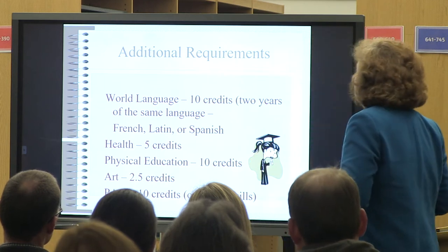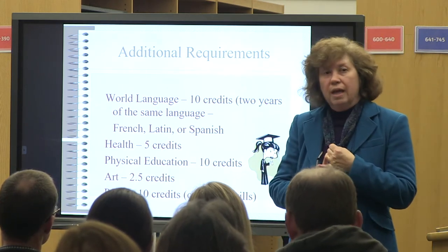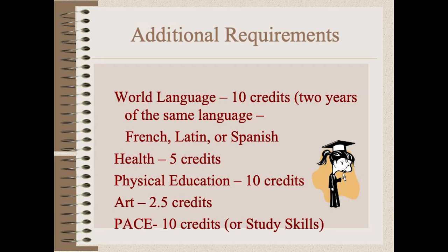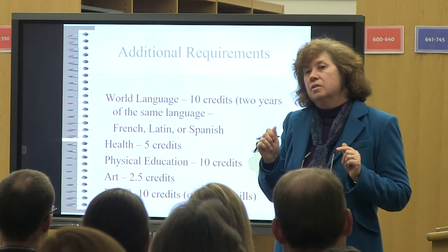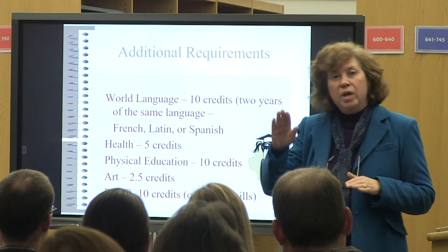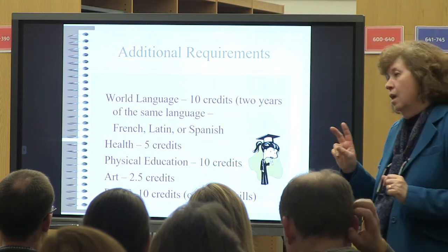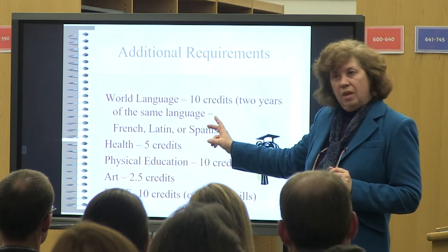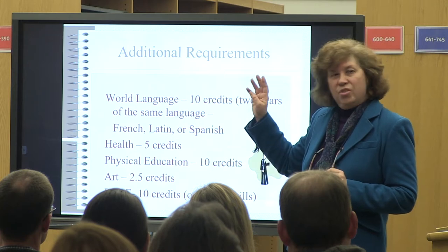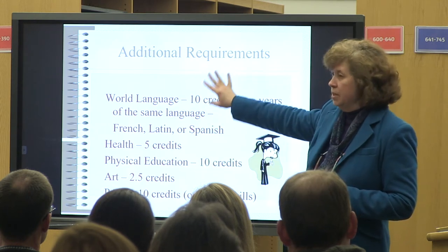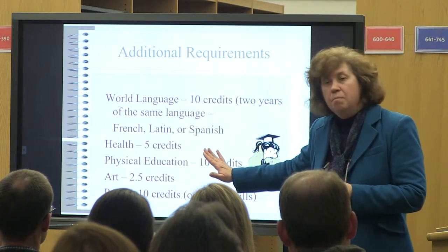All students must take at least two years — two levels — of the same world language at the high school level. We have three options: French, Spanish, and Latin. We offer four levels of each language. This is probably the biggest difference between our graduation requirements and what a four-year college might prefer. While we only require two years of the same world language to graduate, we tell students that if they're considering four-year colleges, they probably want to take a minimum of three. If they want to do something in an international field or need to take a language placement exam, they want to do all four. Two is the graduation requirement, but depending on their goals, they may want to take more — and many of our students do.